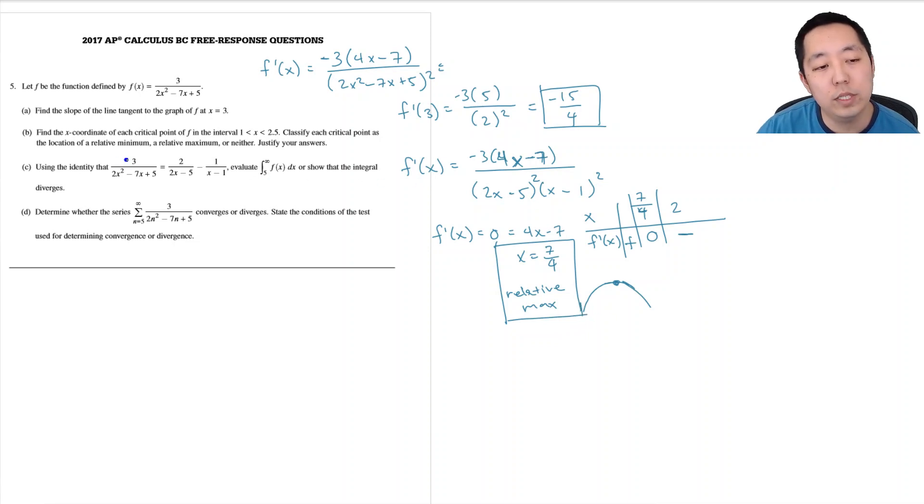Now critical points actually are technically when the derivatives are 0, but x is equal to, so when the denominator is 0, when the derivative is undefined is when there's also a critical point. So I need to look at when the denominators are 0. That happens at 5 halves and 1. But these are neither. Because these are asymptotes. So these are neither min's or max's.